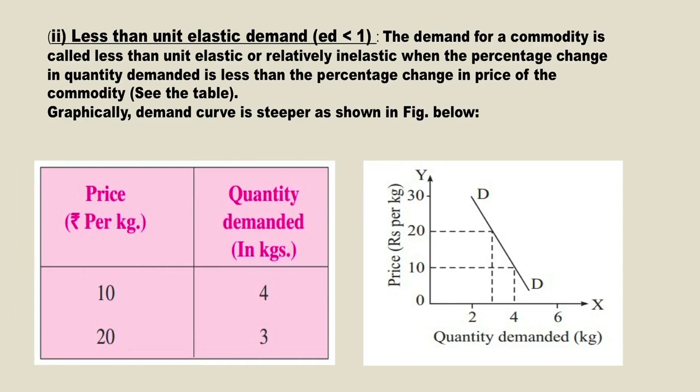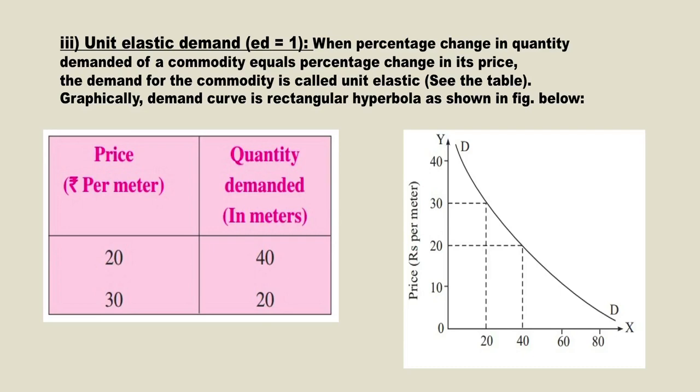The third case is elasticity of demand equal to one. In this case, there is an equal proportionate change in quantity demanded to the change in price. When the price decreases by 10 percent, the quantity demanded increases by 10 percent. The table shows price increases from rupees 20 to 30 and quantity demanded decreases from 40 to 20 — a proportionate change.